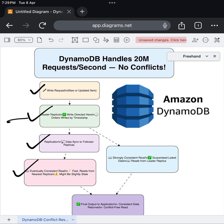But for many use cases, like showing product listings or user profiles, this is perfectly fine. The second option is the strongly consistent read.